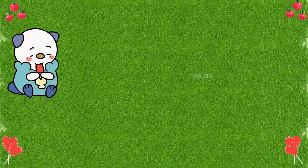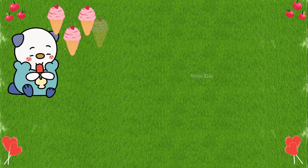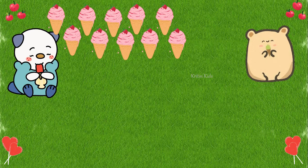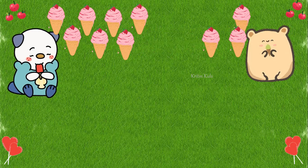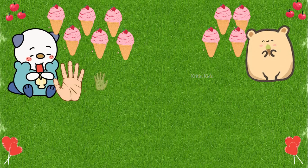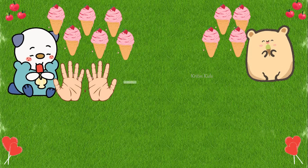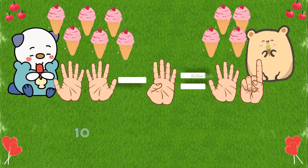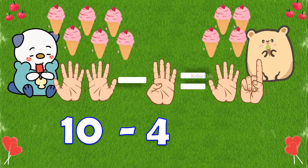Here is one more example. One, two, three, four, five, six, seven, eight, nine, ten — I have ten ice creams. Of these ten ice creams I will give four ice creams to my friend — one, two, three, four. Now how many ice creams do I have? I had ten ice creams, so we use all five fingers of both hands. I have given four ice creams to my friend, so we close four fingers. We have six fingers left — that is ten minus four equals six.